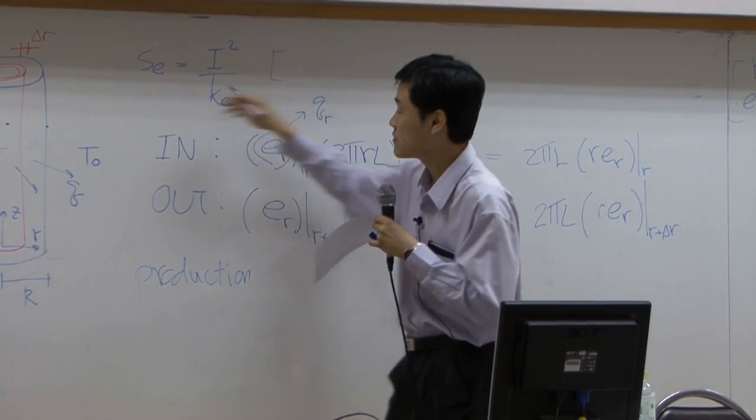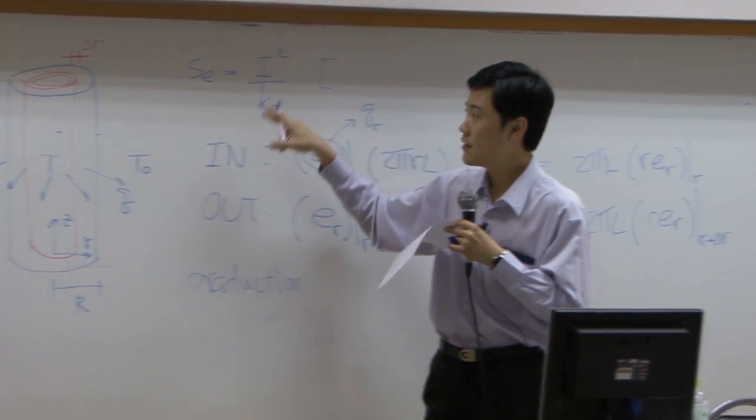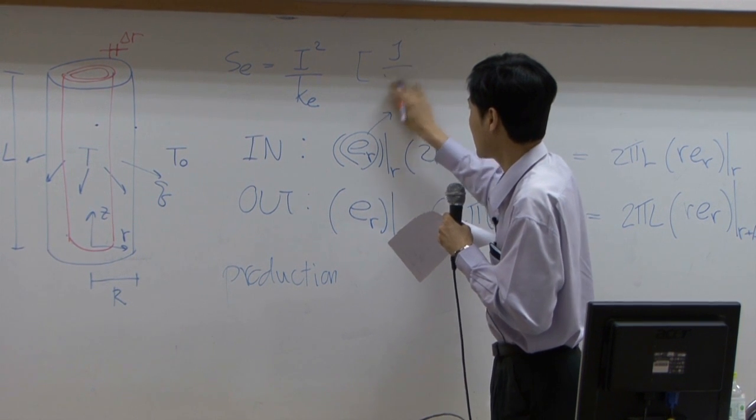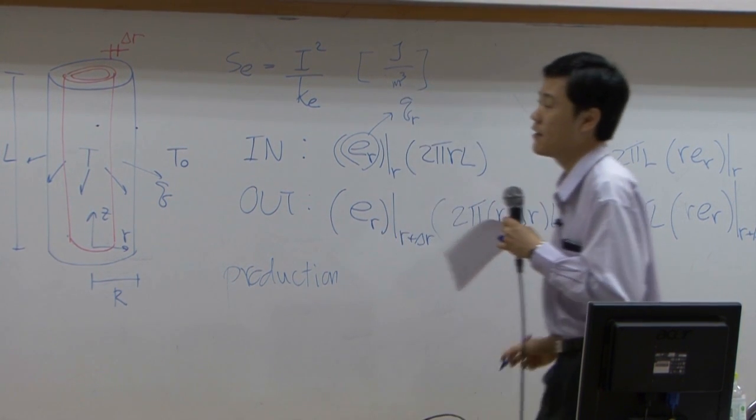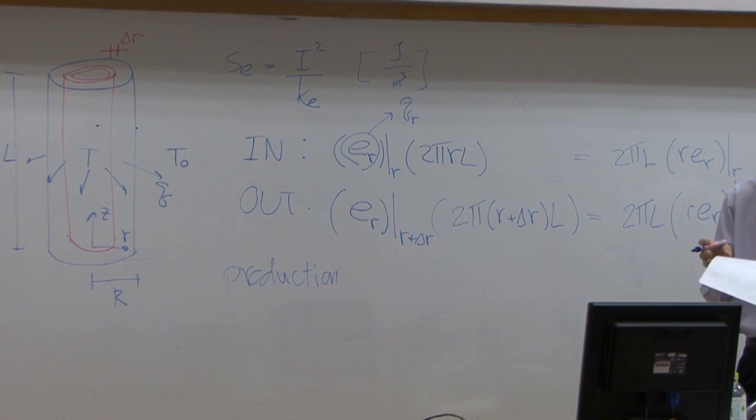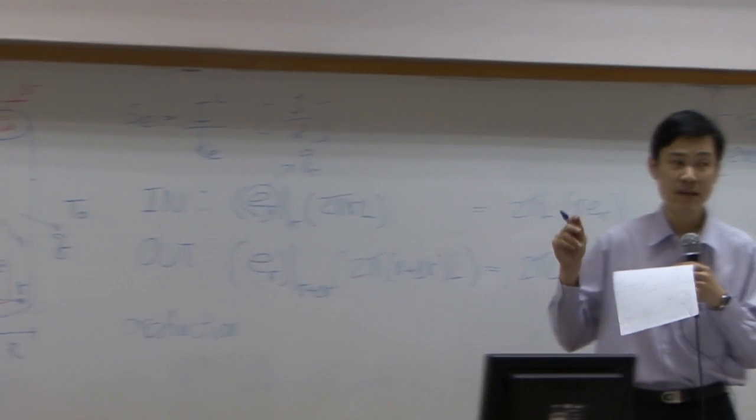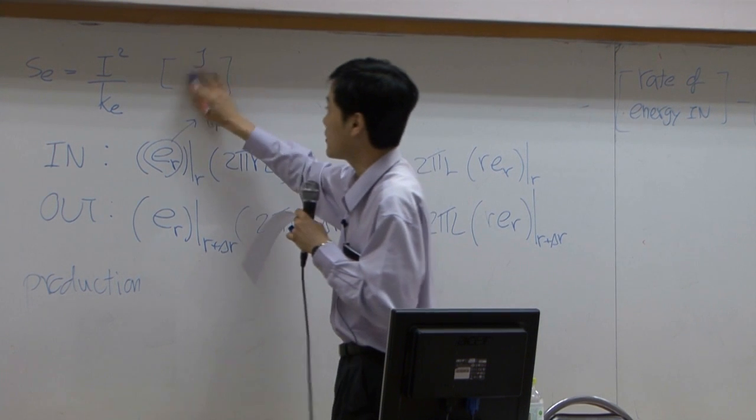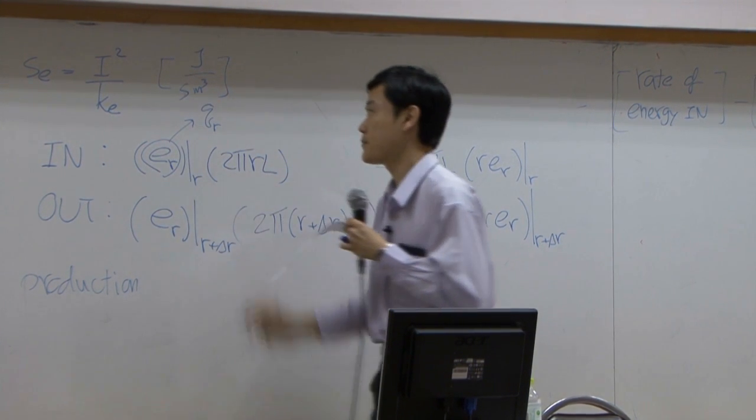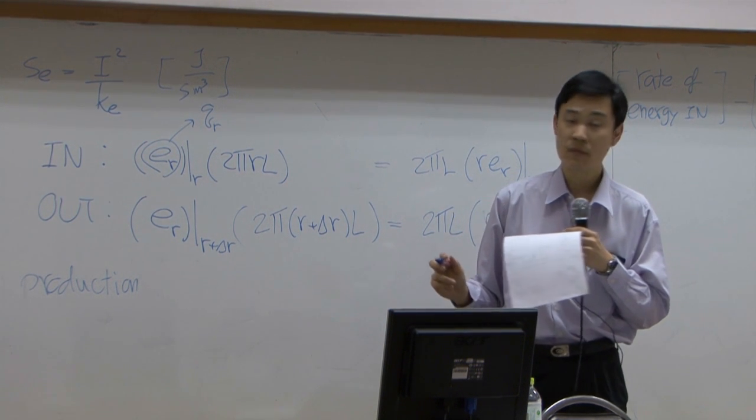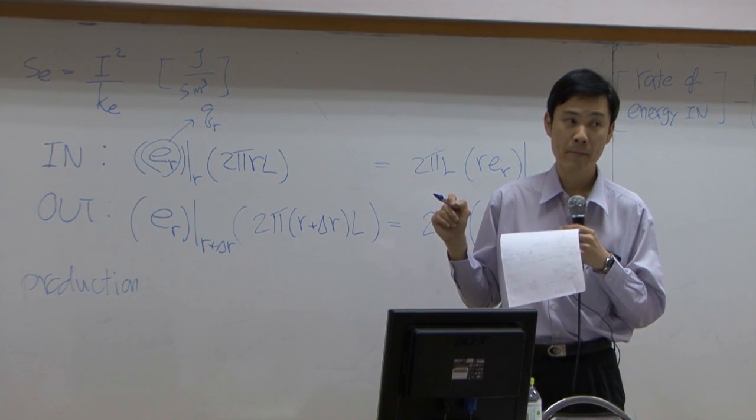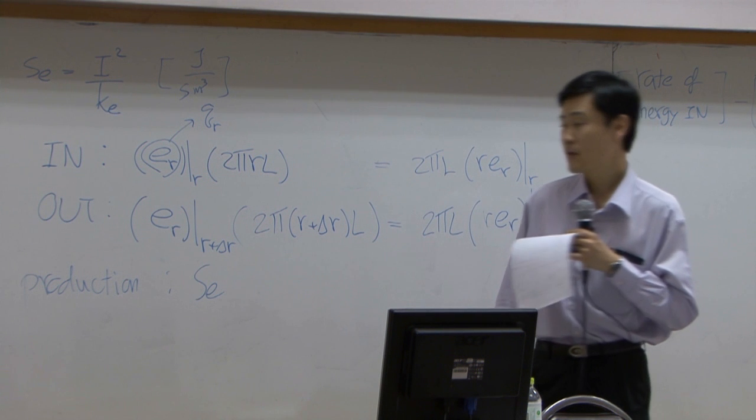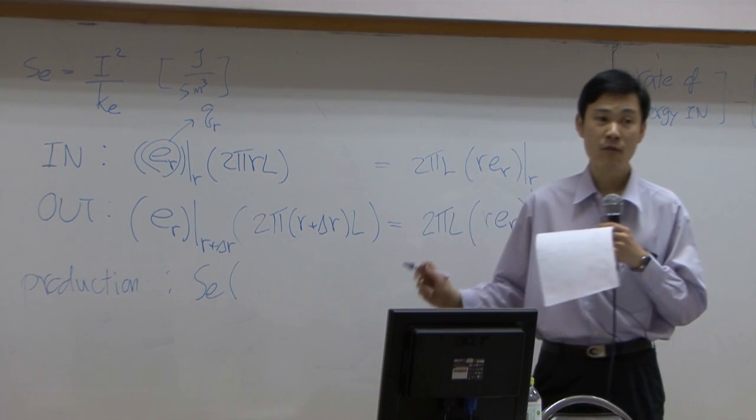From the problem statement, the heat produced given here has unit of joule per volume or per square meter of, I'm sorry, per cubic meter of the wire. So in order to get the same unit in our equation, the equation is supposed to be joule per second. Oh, I'm sorry. This one is joule per second, cubic meter. We need to multiply by the volume. What is the volume?